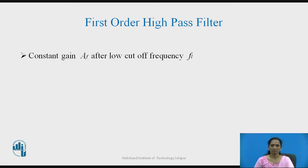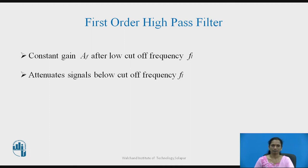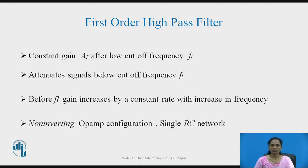A first order high pass filter provides constant gain for higher frequencies — it passes signals which have high frequency and therefore has constant gain AF after its lower cutoff frequency. Before that, it attenuates the signal by some attenuation constant, called the roll-off rate. Below the cutoff frequency, the signal will be attenuated.